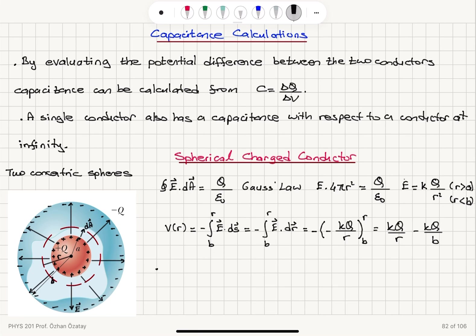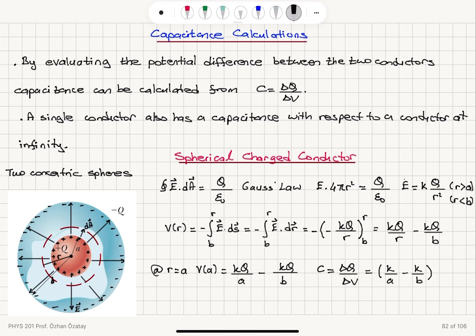Evaluating the potential at r equals a: it is kQ over a minus kQ over b. The capacitance is then C equals delta Q over delta V, which gives Q divided by V. So the capacitance equals (k over a minus k over b) to the power of minus one. That is the capacitance of this configuration: inner conductor has charge plus Q, outer conductor has charge minus Q, inner conductor has radius a, and outer conductor has radius b.